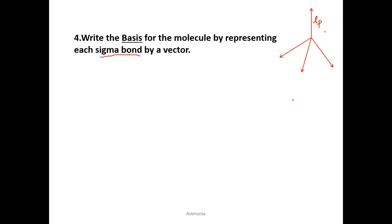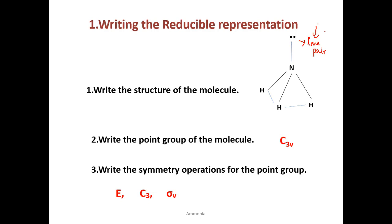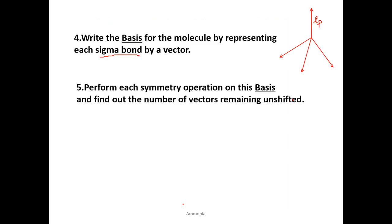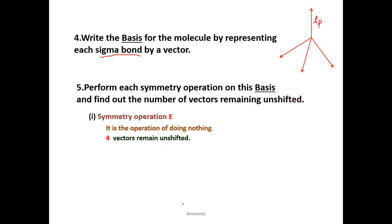We find the number of unshifted vectors for each symmetry operation. The symmetry operations are E, C3, and sigma v. First, performing the operation E — E does nothing, so there will be no change in any of the vectors. All four vectors remain unchanged. The number of unshifted vectors is 4.